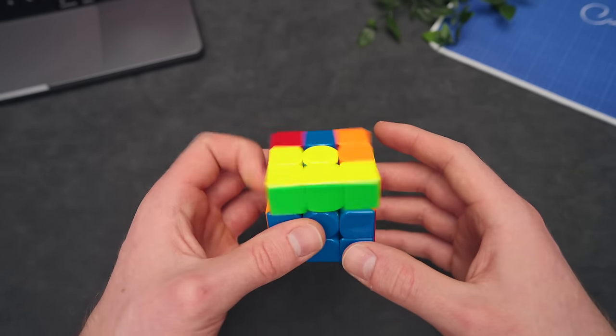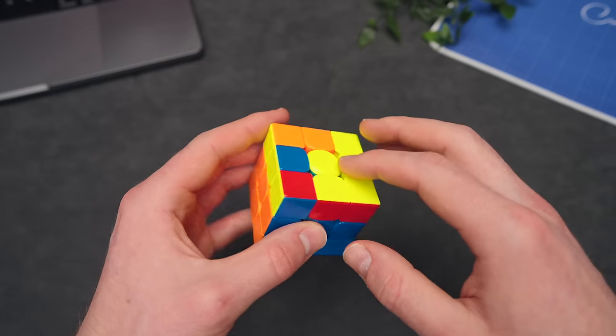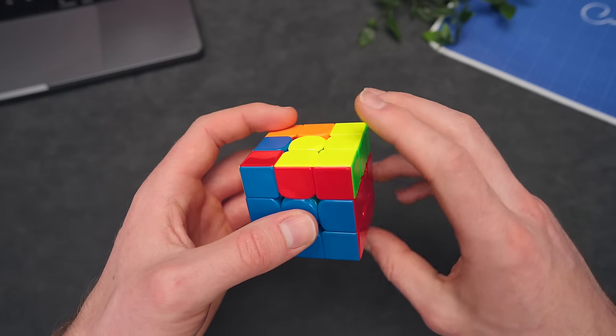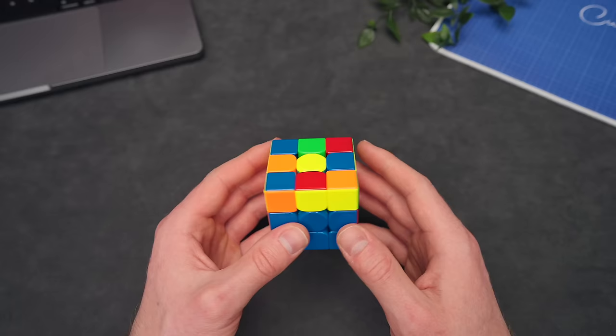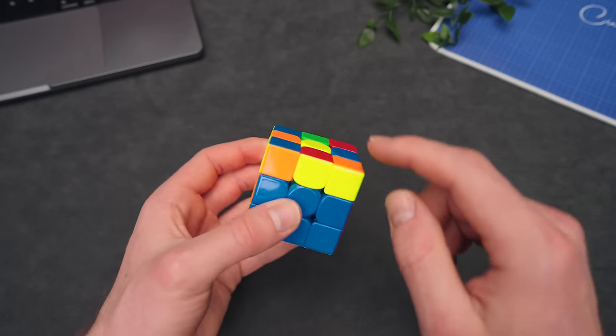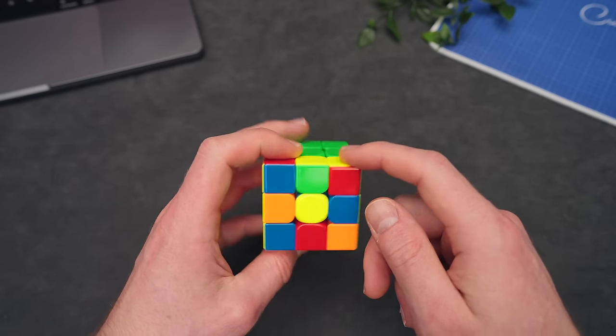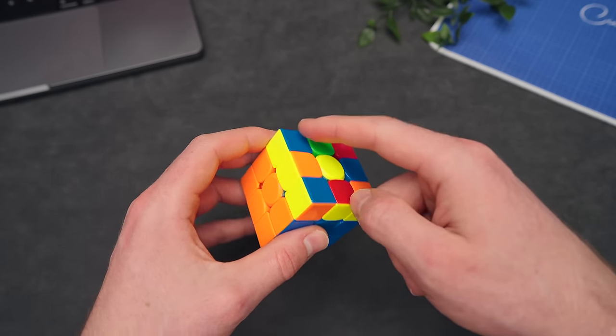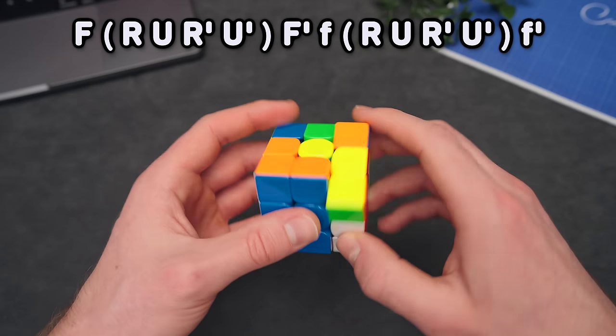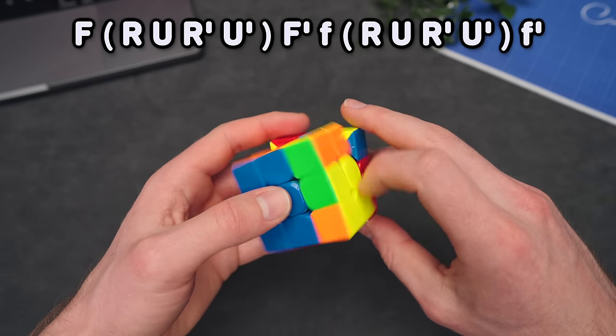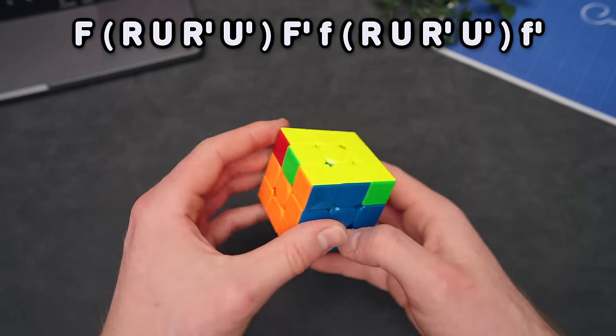For the hook case right here, we want to get this B shaped right here with a full line like that. If we then do the algorithm, we would get OLL in one step. For the dot case, we want to have a full line right here, a line here, and a line here. If we then hold the full line to the left and do our algorithm, which is F, sexy, F prime, into this hook case, we would do OLL in one step.